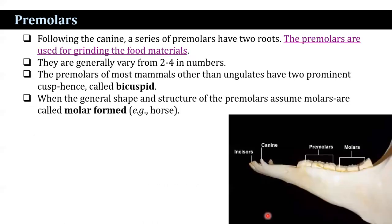After canines, a series of premolars follow, which have two roots. Premolars are used for grinding food materials and are generally two to four in number. The premolars of most mammals, other than ungulates, have two prominent cusps; hence they are known as bicuspid. When the general shape and structure of the premolars assume molar-like form, they are known as molariform.